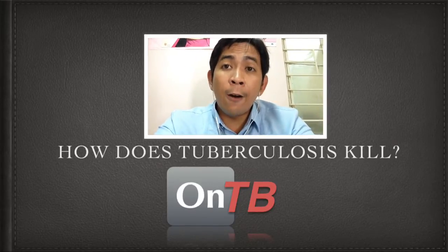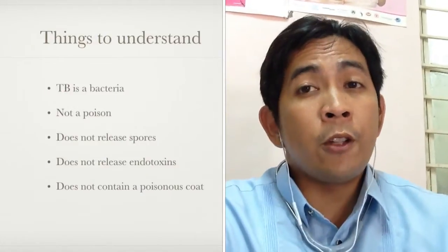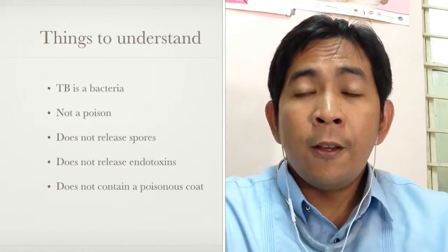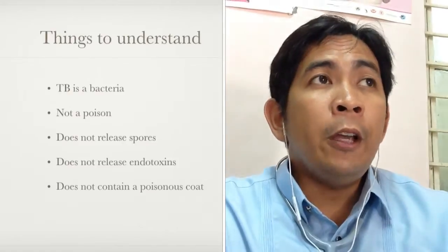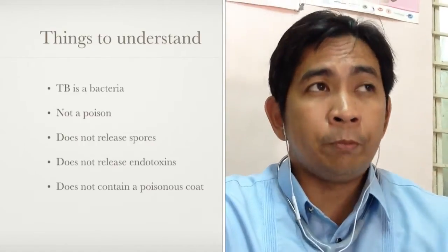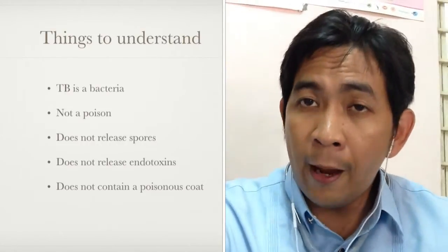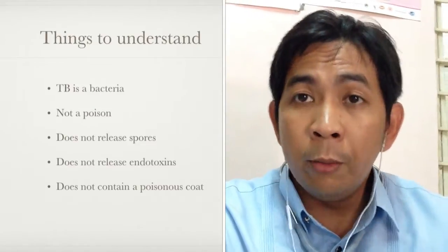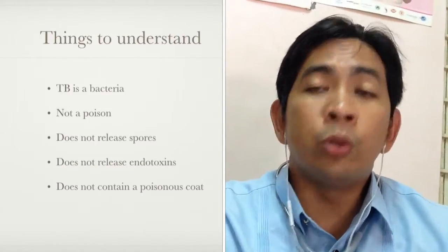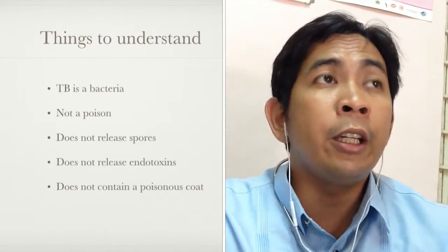Today we are going to talk about how tuberculosis kills a patient. Now, before we start, we need to understand certain things. TB is a bacilli — it is a bacteria. It is not a poison. It does not release spores just like anthrax that can kill a person. It does not contain an endotoxin like cholera that can affect the normal physiology of the human body, and it does not have a coat that acts like a poison just like other viruses or bacteria that can kill instantly.